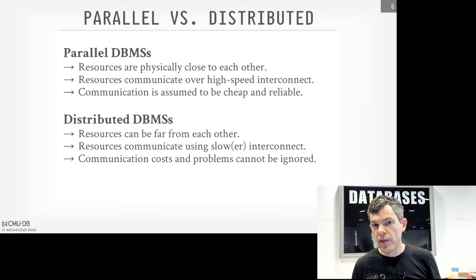The only systems that really don't use thread per worker are those forked from Postgres, since they just inherit that process per worker model. The other category is embedded database systems, which typically aren't in charge of their own threads because they're embedded inside another application. The application makes calls into the embedded data system library, and whatever thread made that call is used by the library to invoke the query. DuckDB can spin up additional threads for parallel query execution, but in the classic embedded model like SQLite and RocksDB, it's whatever thread entered the request that executes it — there is no dispatcher.